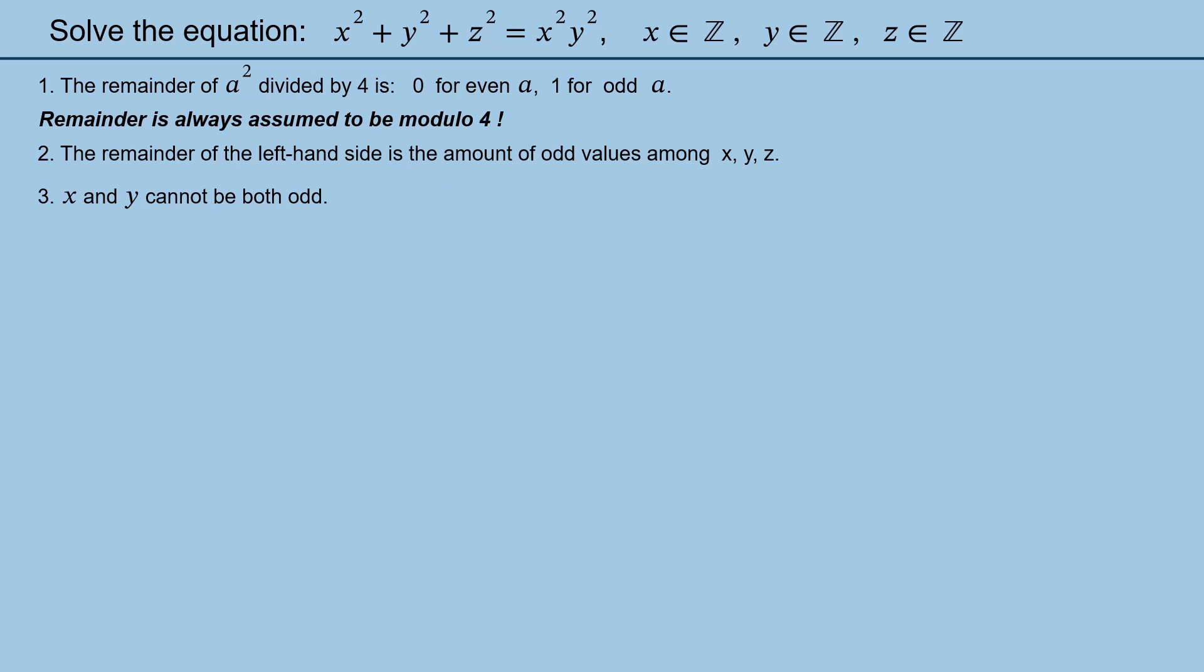Statement 3 means that at least one of x and y must be even. Therefore the product xy is even, while the square of this product is exactly the right-hand side. So according to statement 1 the right-hand side has remainder 0. Therefore the left-hand side must have 0 remainder. And this is your last chance to continue on your own.